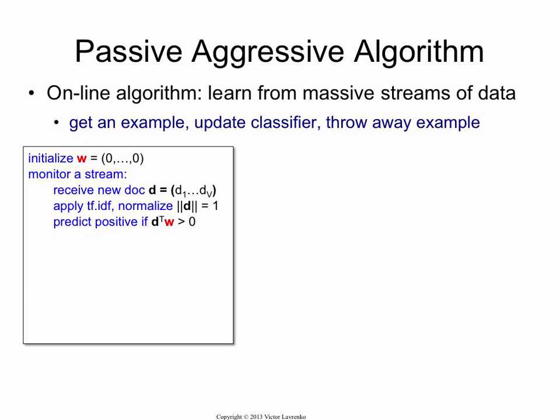And then if you need to make a prediction, you just multiply it by your weight vector and see if it's positive or negative. So in the beginning, it's just going to be zero, because you haven't learned anything yet. But later on, you'll get a prediction.